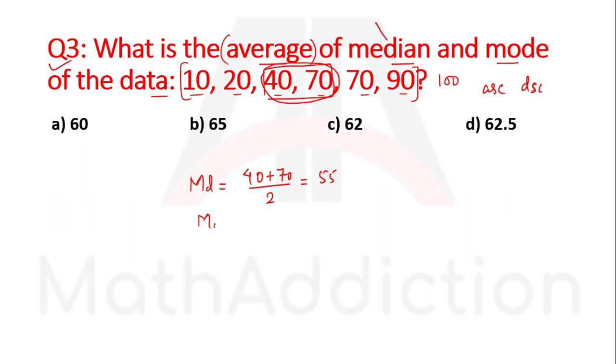For mode, the value that repeats most is 70, which appears twice. So mode is 70.